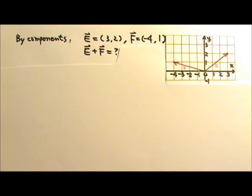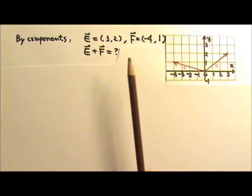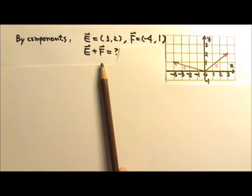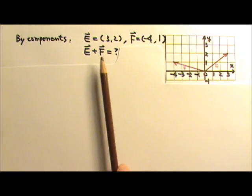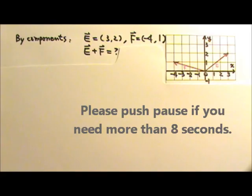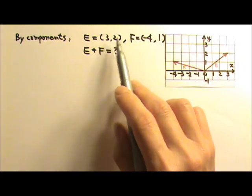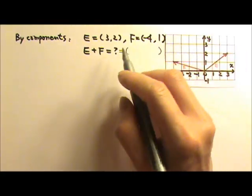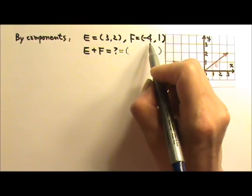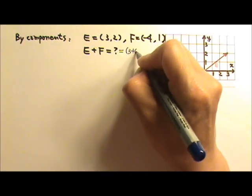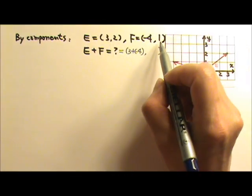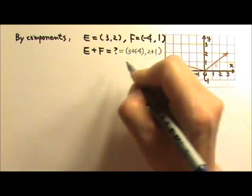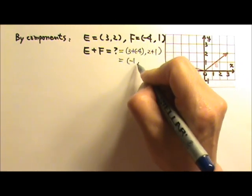The third method is adding by components. If vectors are given as ordered pairs, adding by components is very convenient. For example, what is E plus F? All we do is add the corresponding components: the X component is the sum of the two X components (3 plus negative 4), and the Y component is the sum of the two Y components (2 plus 1). This gives negative 1, 3.